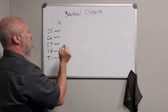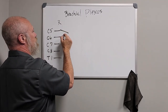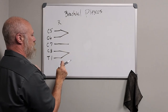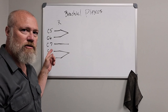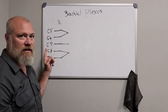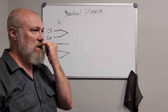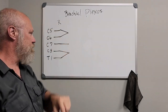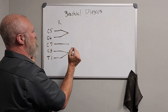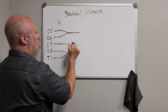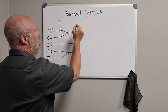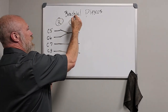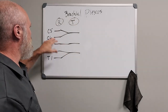C5 and C6 are going to join together, C7 continues alone, and C8 and T1 join together. If you're finding yourself confused as to why there's a C8 spinal nerve, find my spinal nerve segmentation video and I'll explain that. So we've moved from roots, and now you're going to have these structures join into trunks.